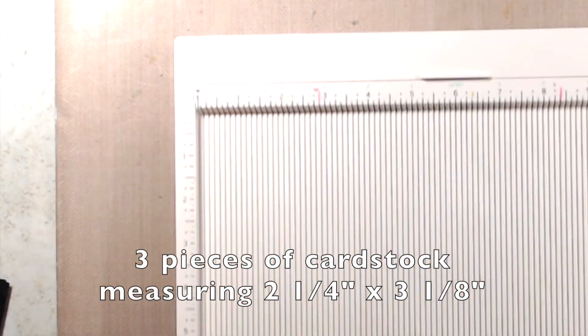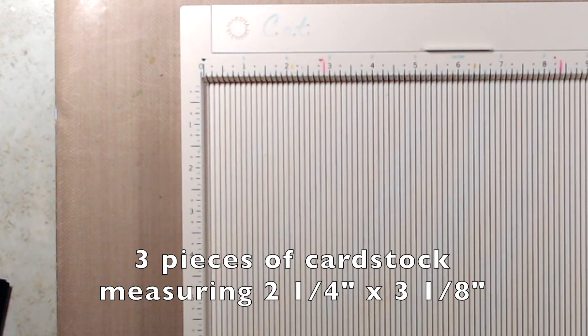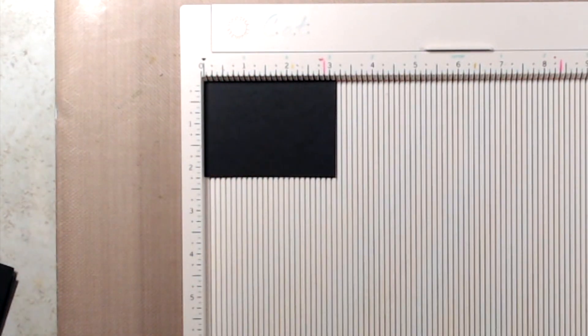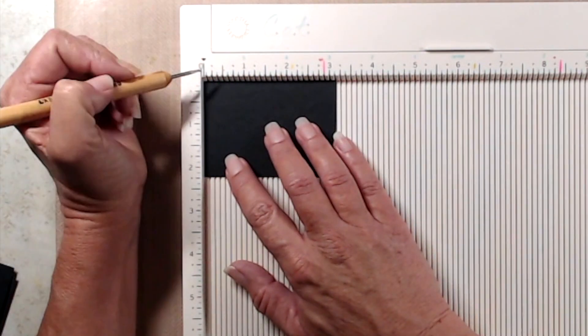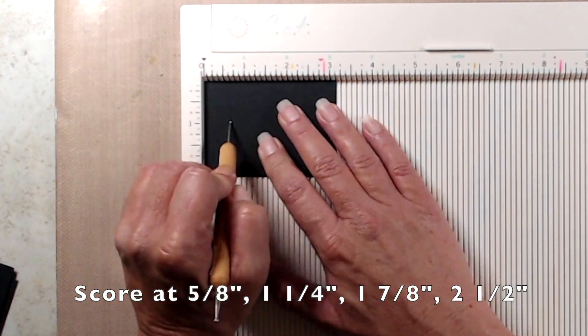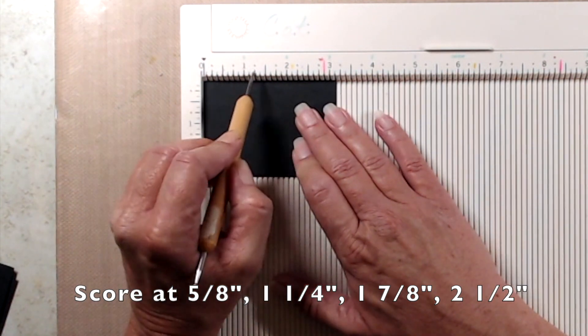To start out you'll need three pieces of cardstock that measures two and a quarter by three and one eighth, and with the three and one eighth side up at the top of your scoreboard, you're going to score at five eighths of an inch, which is the notch just past the half inch mark.